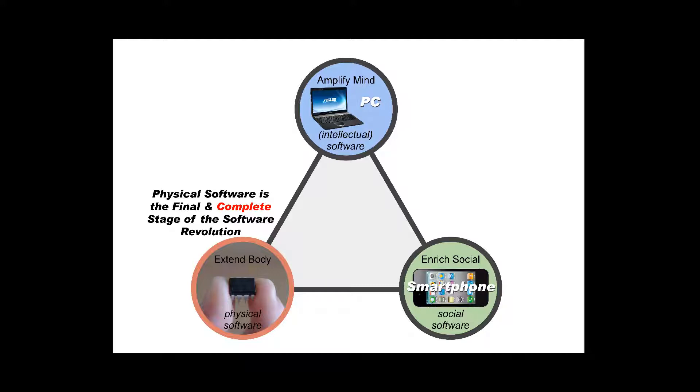So the PC is a device that tries primarily to amplify our mind, and we call it software. The smartphone in the green is something that enriches our social life, so we call it social software. And in the red, the physical software is something that's going to extend our physical body.